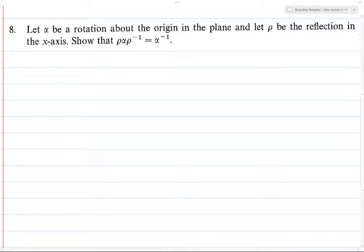Let alpha be rotation by angle theta and rho reflection. Okay. The only reason I wrote this out was because I want to give a name to this angle.